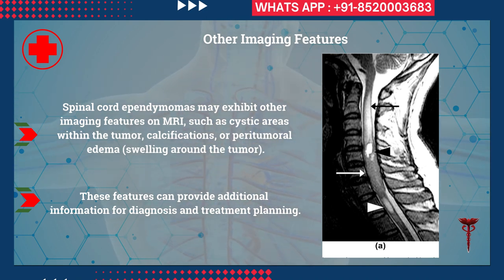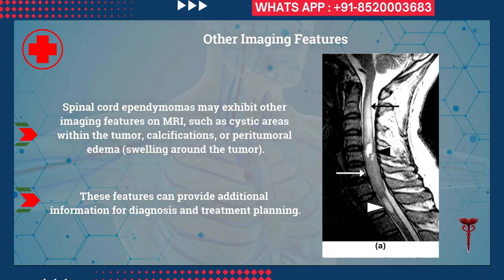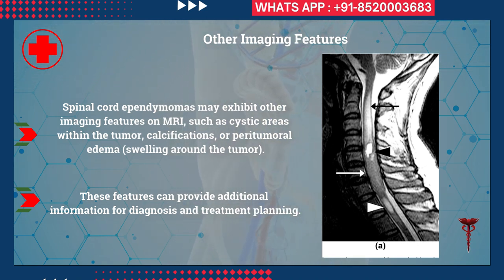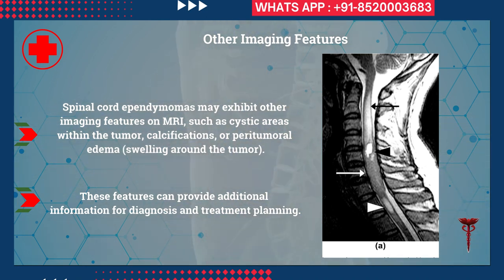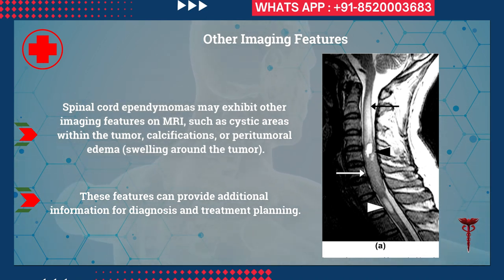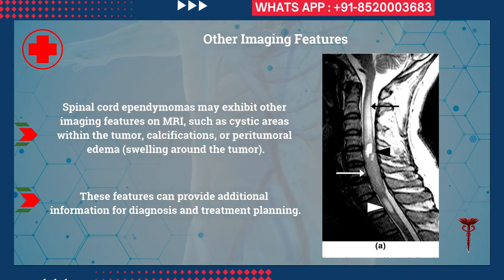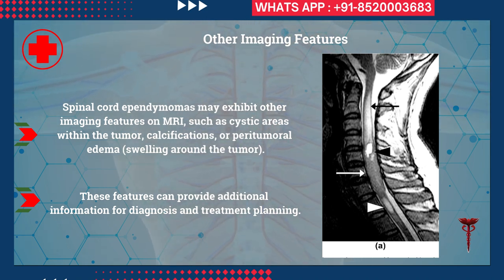There are other imaging features on MRI that help differentiate ependymoma from other spinal cord tumors. These include cystic areas within the tumor, sometimes calcifications, and peritumoral edema. You can see the peritumoral edema here — the edema and tumor together cause swelling of the spinal cord. These features provide additional information for diagnosis and, most importantly, for planning of surgery.